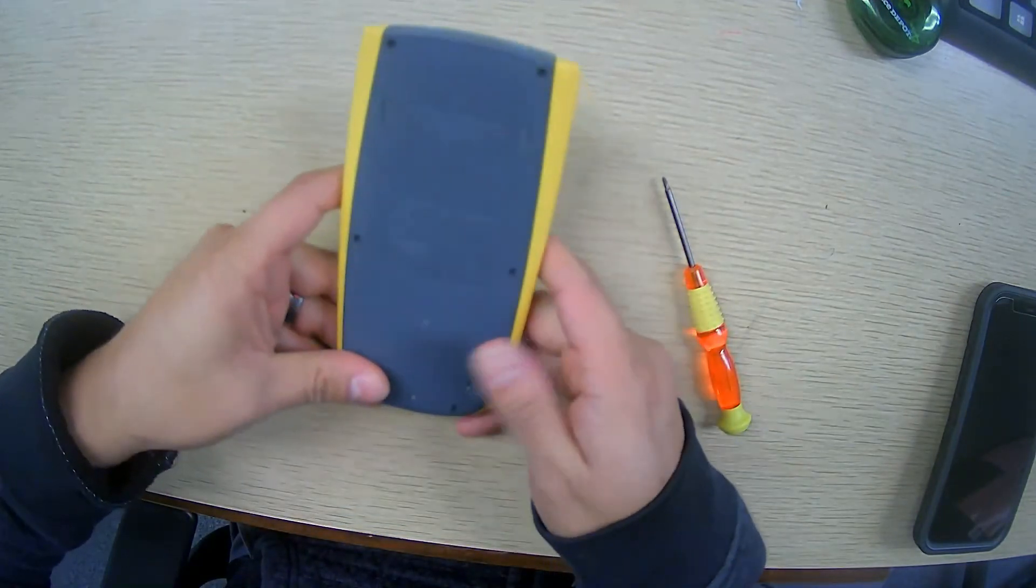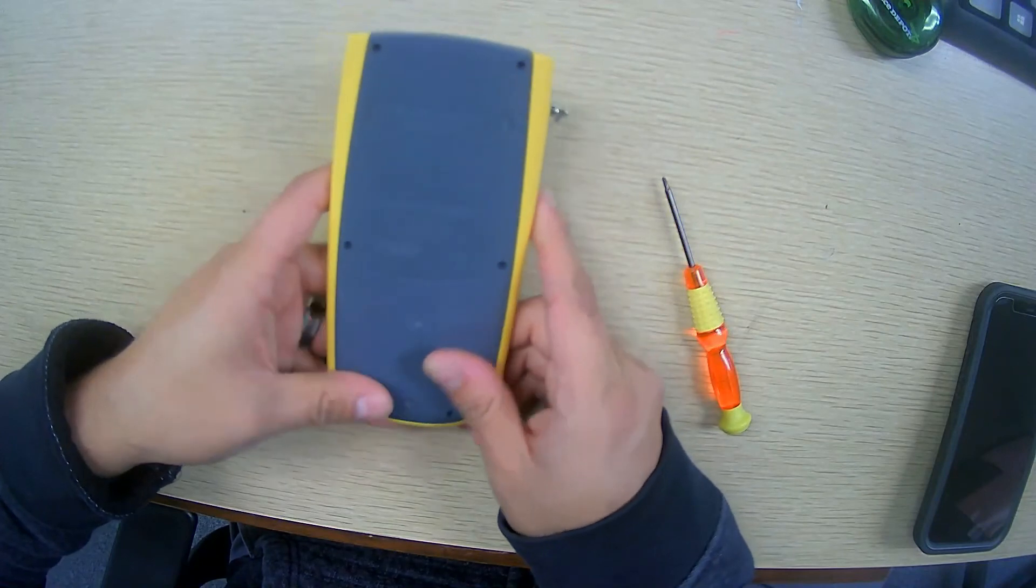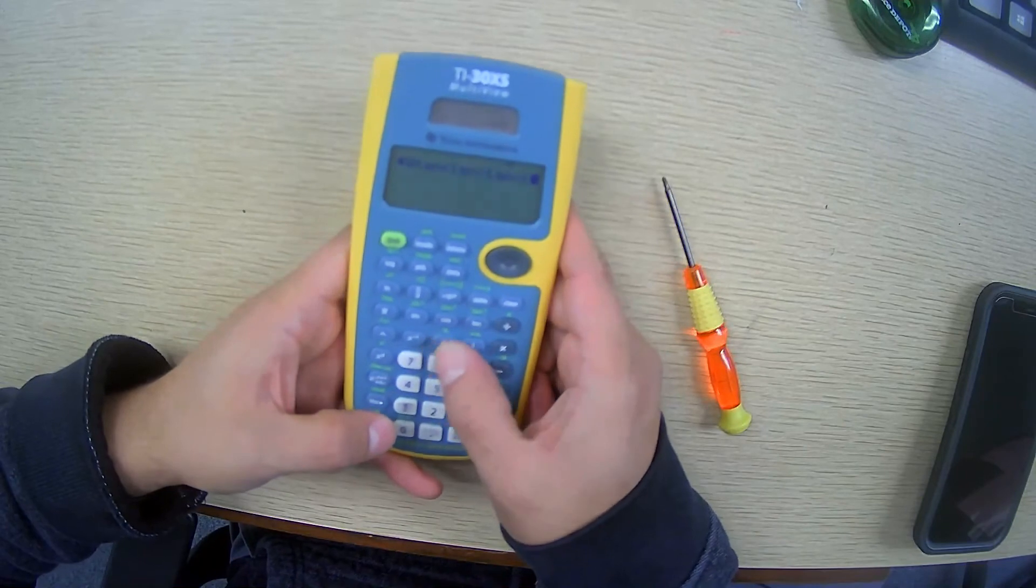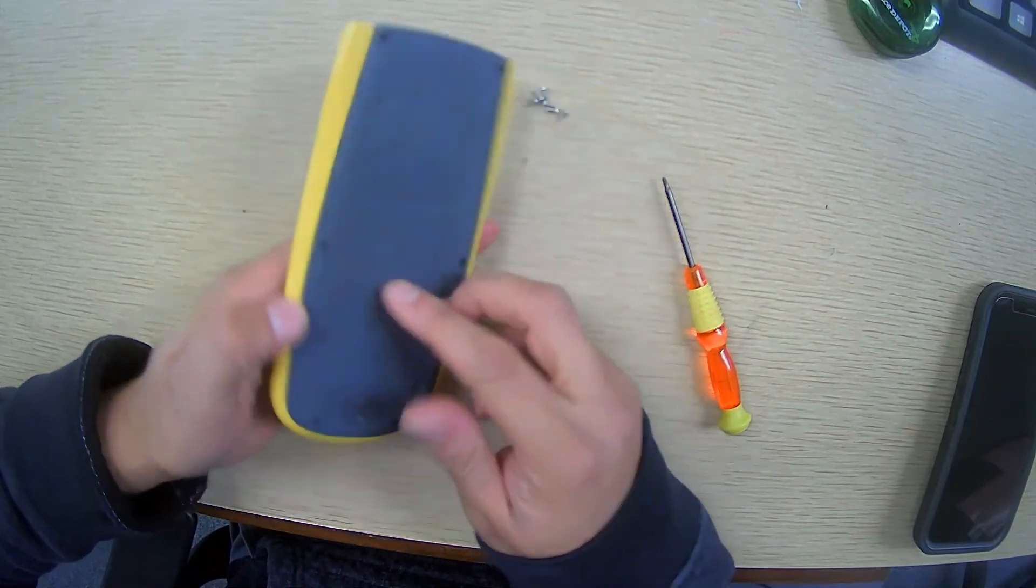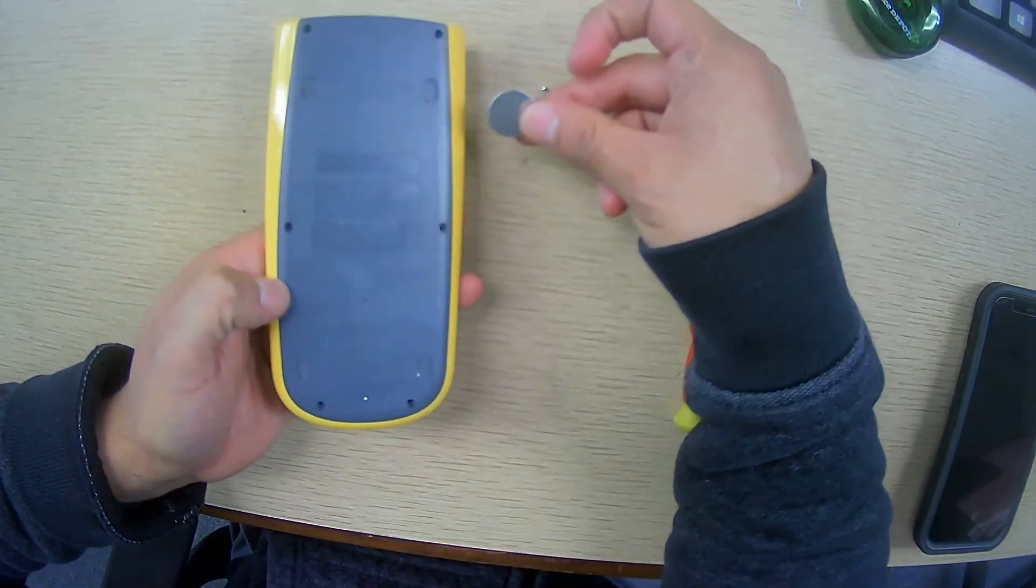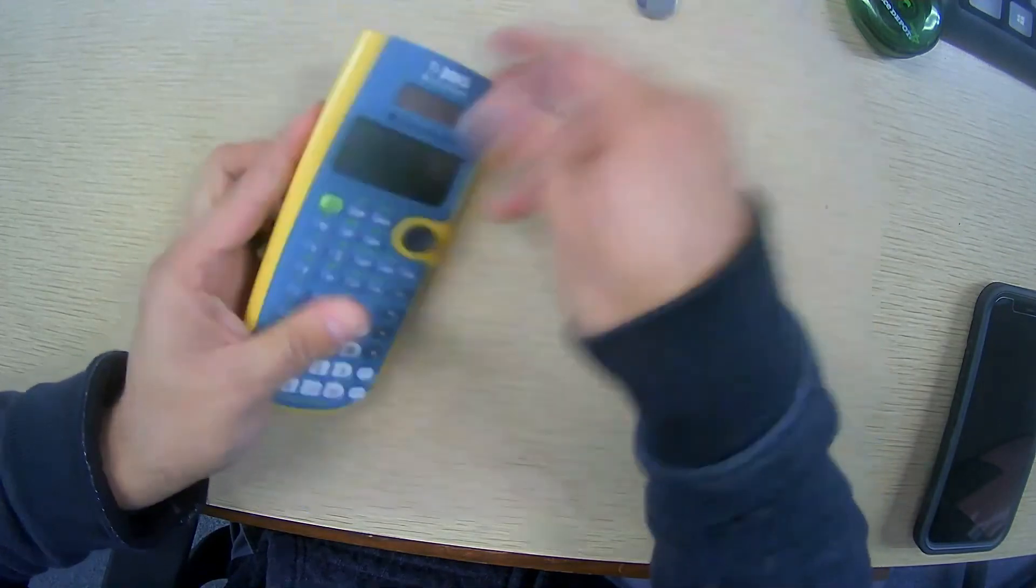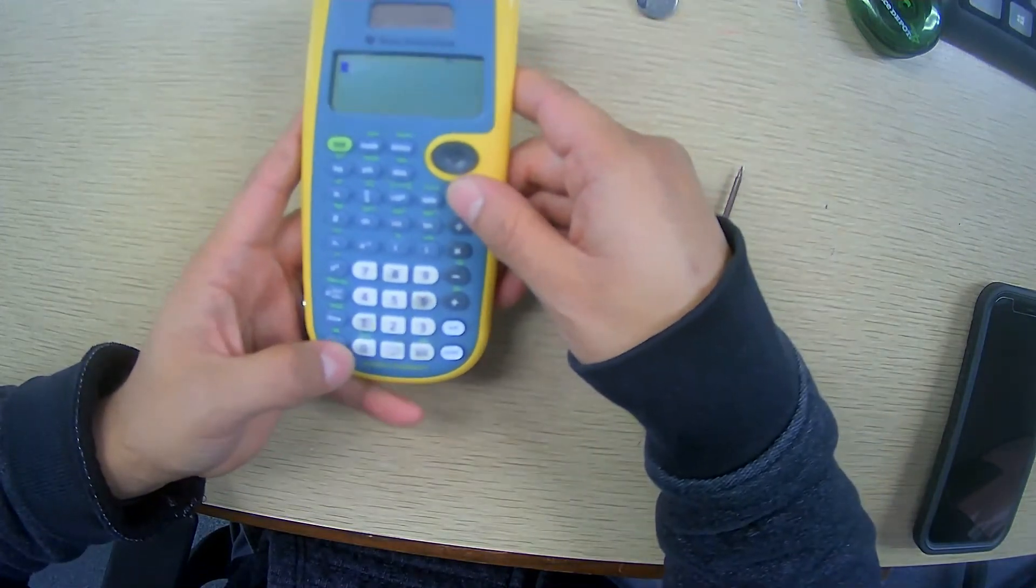And once again, this is for us teachers that are trying to make sure the calculators are working. And look at that, it's perfectly working now. And all we have to do is seal it back. And by the way, these batteries that I bought are like three for a dollar. So we're not spending so much money, and at least now the kids will be happy to use the calculators.